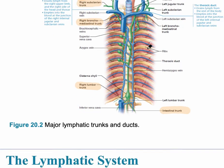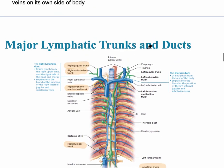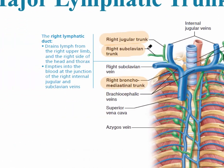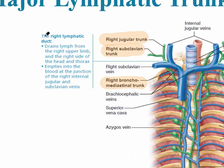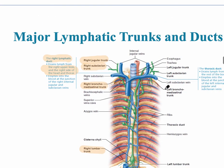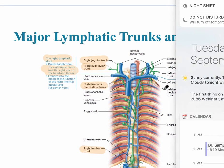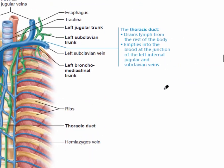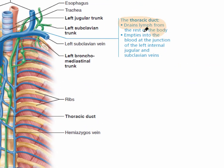Those trunks then lead into one of two ducts. On the right side is the right lymphatic duct, which drains lymph from the right upper limb and the right side of the head and thorax. Everywhere else, all of those trunks lead into the thoracic duct.